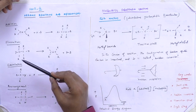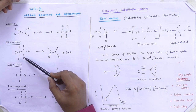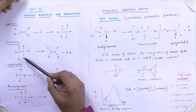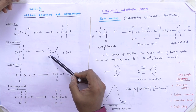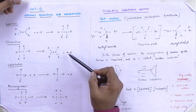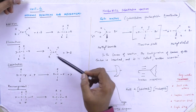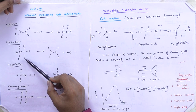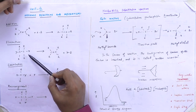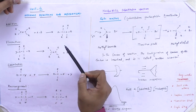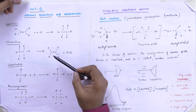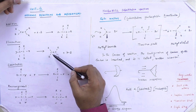Next is elimination reaction. Elimination reaction is exactly opposite to addition reaction. Here, a saturated compound having some functional group (Y or Z) is eliminated, and the final product is an unsaturated compound — that is, a compound having a double bond.